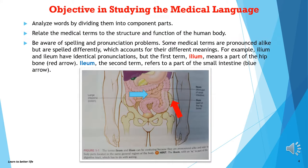The objective in studying the medical language: analyze words by dividing them into component parts; relate the medical terms to the structure and function of the human body; and be aware of spelling and pronunciation problems. Some medical terms are pronounced alike but are spelled differently, which accounts for their different meanings.